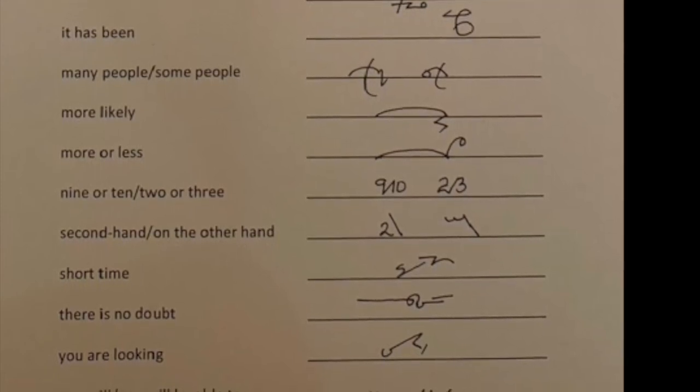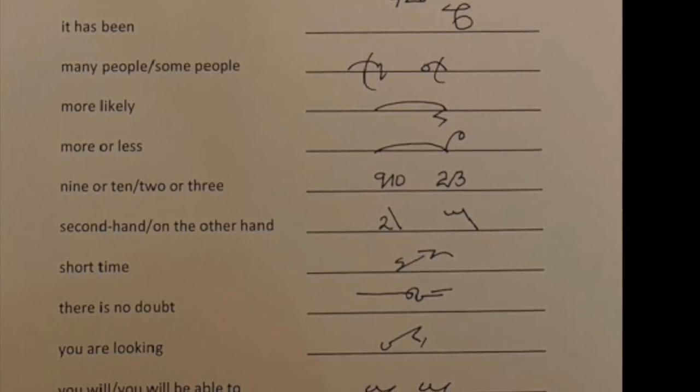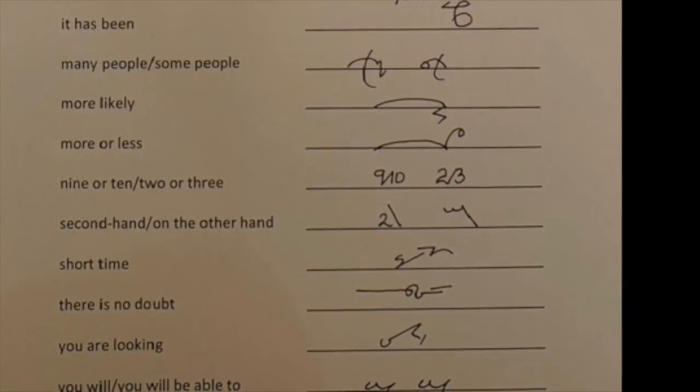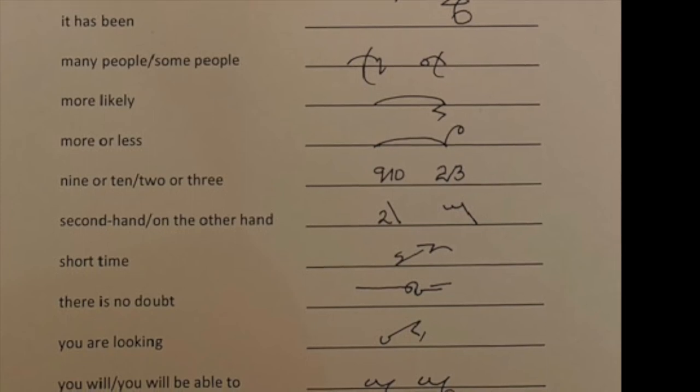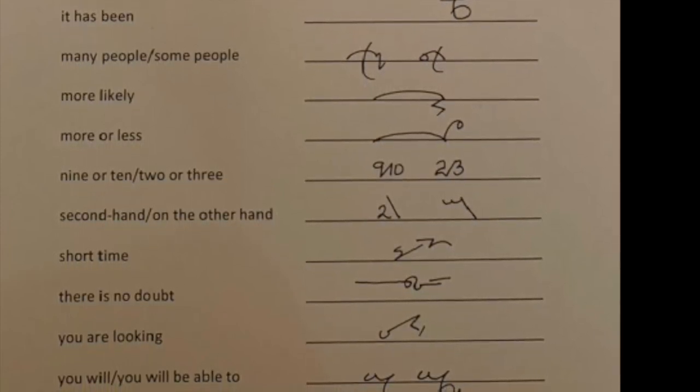Next one, SHORT TIME. The T of SHORT is also doing the work of the T of TIME. And we could have just disjoined the M underneath it, but it's just as quick to keep the pen on and to put the I indicator in.